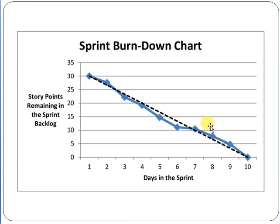The sprint burn down chart is a very important document — a graphical representation of the work remaining in the sprint, which is a three to four week period. When implementing projects, we use the sprint burn down chart in the daily scrum meeting, where the scrum team, product owner, and scrum master discuss how much work is completed and how much is remaining. Thank you so much for your time — that's all from my side.